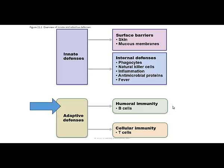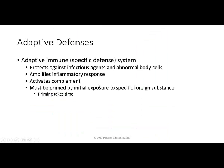The difference between this type of immune branch compared to the innate defenses is that it's very specific. It targets specific antigens that have infected cells or free antigen, depending on which branch we're looking at — humoral versus cellular — but it's very specific.